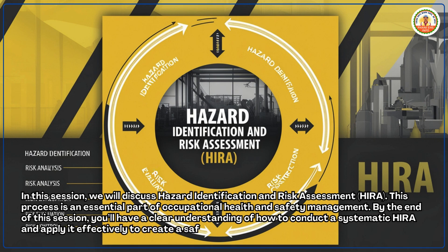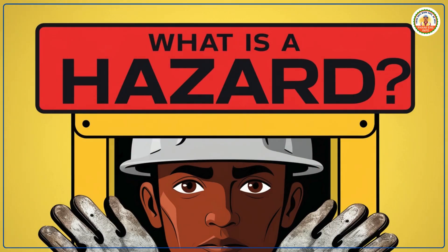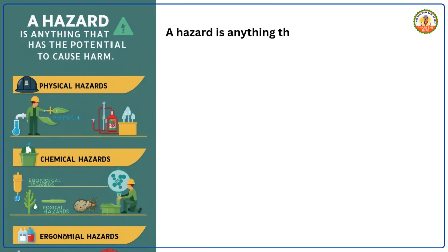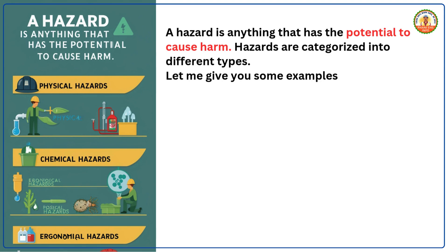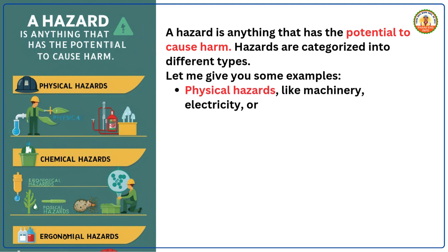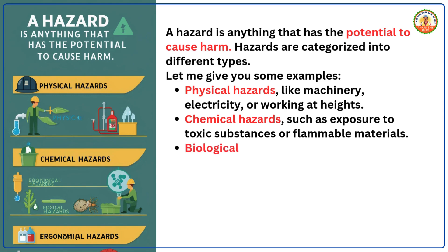What is a hazard? A hazard is anything that has the potential to cause harm. Hazards are categorized into different types. For example: physical hazards like machinery, electricity, or working at heights; chemical hazards such as exposure to toxic substances or flammable materials; and biological hazards including viruses, bacteria, or other harmful organisms.